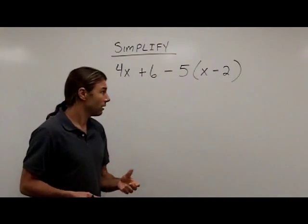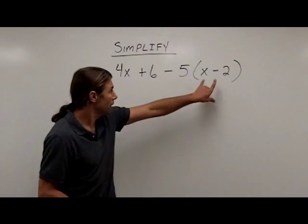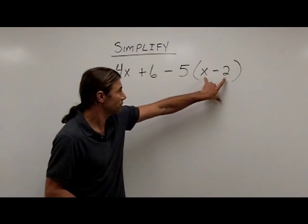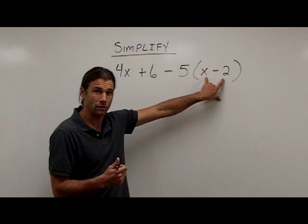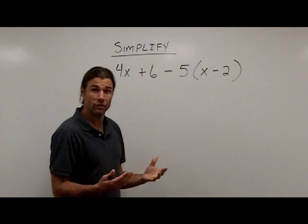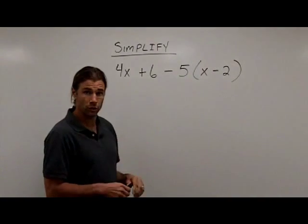You might be thinking, well, we're supposed to do what's in the parentheses first. Well, the parentheses here, you'll notice I have x minus 2. Those are unlike terms, so I can't perform that subtraction. So the parentheses are as simple as I can get them. That's why I'm starting with the multiplication here.